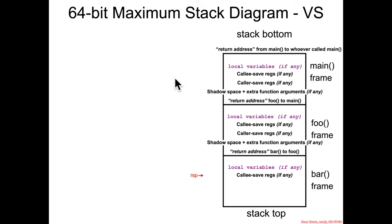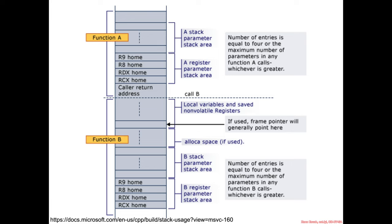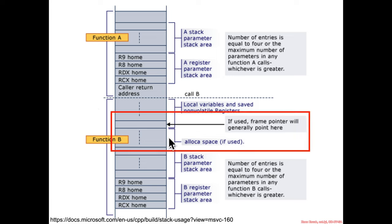At a leaf node function we might have local variables and callee save registers, but no caller save registers or function parameters. Now let's look at the Microsoft documentation to see what they say about stack frame layout and how it's a bit more complicated.